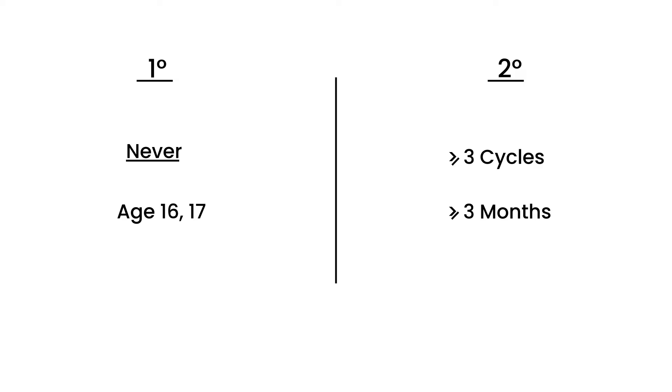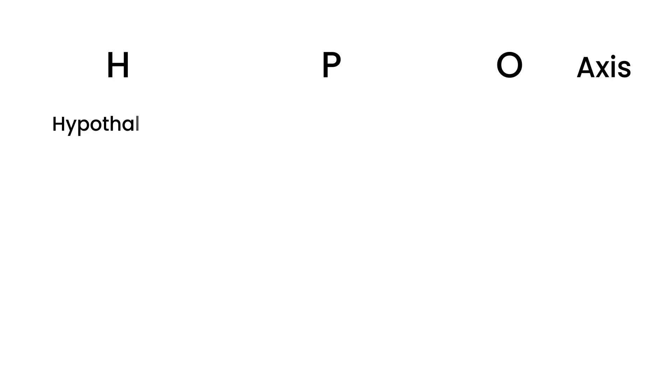Amenorrhea is a big topic, but I will try to break it down into something easier to understand. The first thing I'd like to talk about is the HPO axis. HPO: H stands for hypothalamus, P is the pituitary, and O is ovary. These three all secrete hormones.